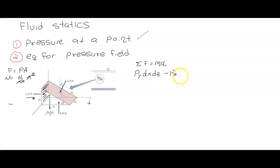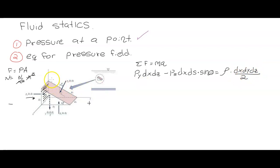In the negative direction we get minus the pressure in s times the differential element in s times the sine of theta. This equals the mass, which is density times volume — the differential element in all directions divided by 2, because we have just half the element — times the acceleration in the y-direction.